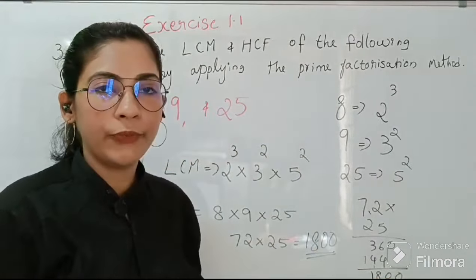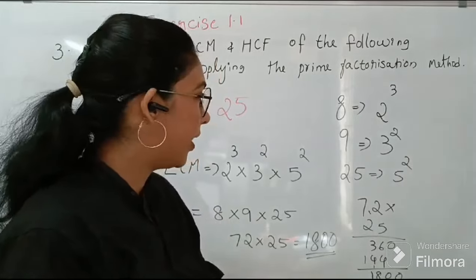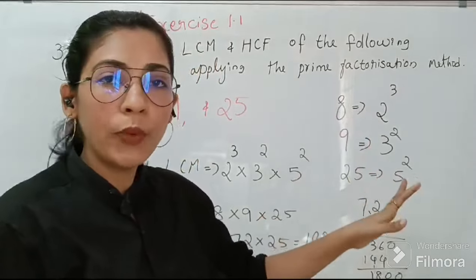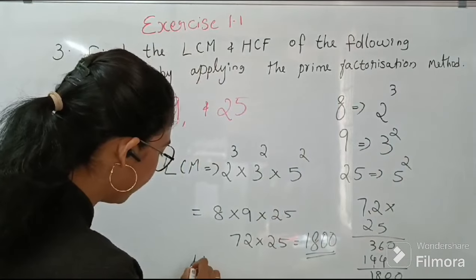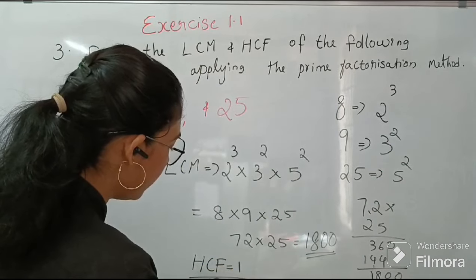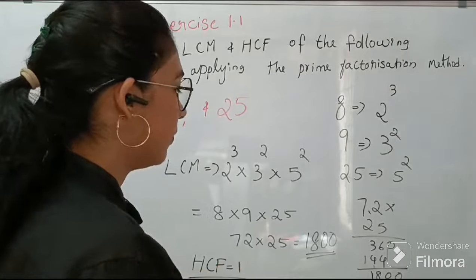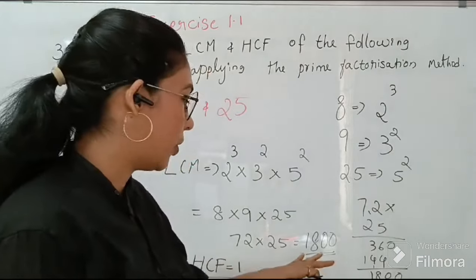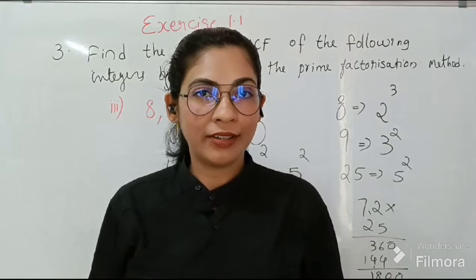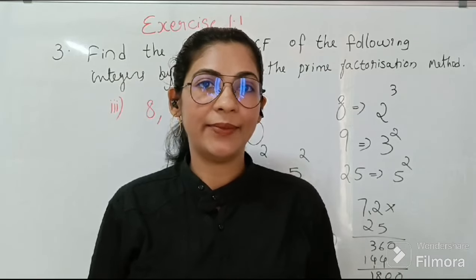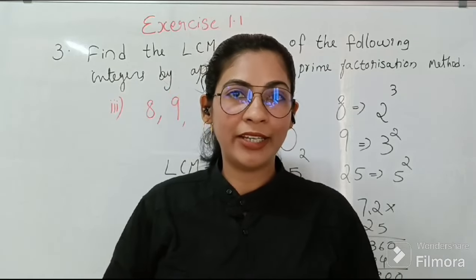Then what is HCF? As we stated earlier, since there is no common factors, we take HCF as 1. HCF is equal to 1. So this is the answer. So LCM is 1800 and HCF 1. Understand the question clearly and practice well. So that's all for the day. Thank you.